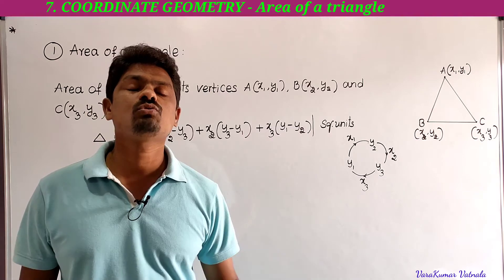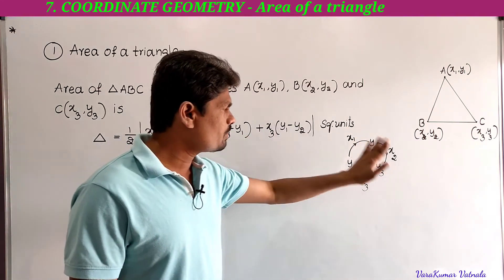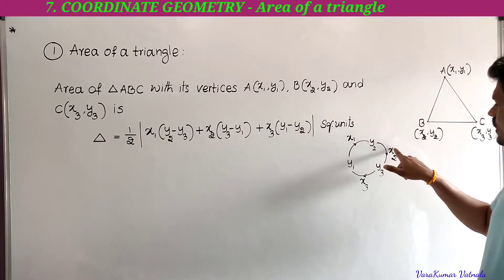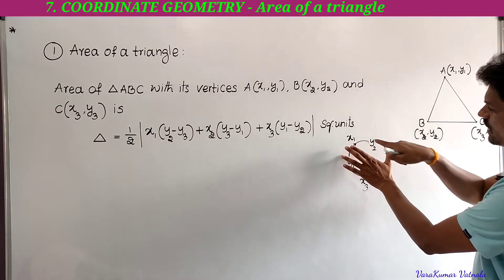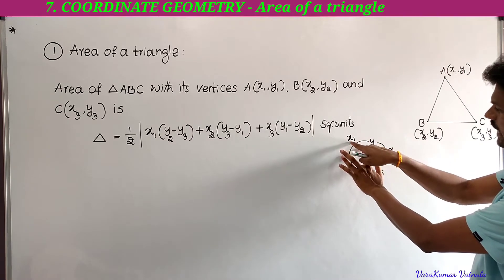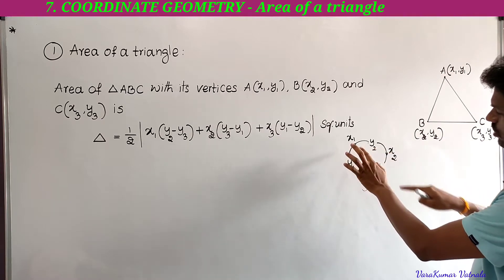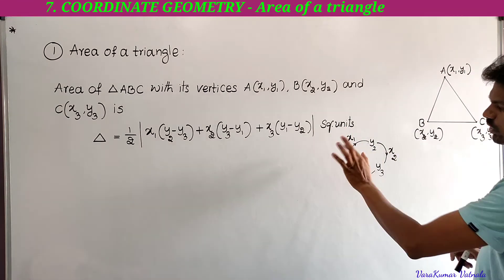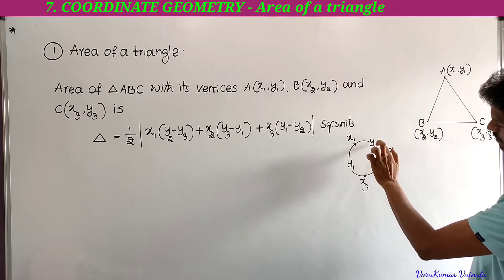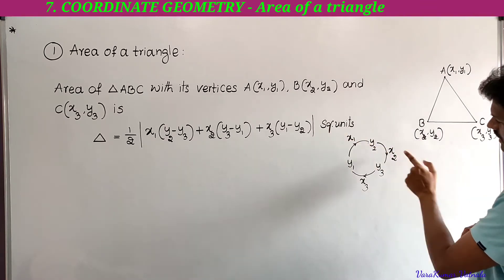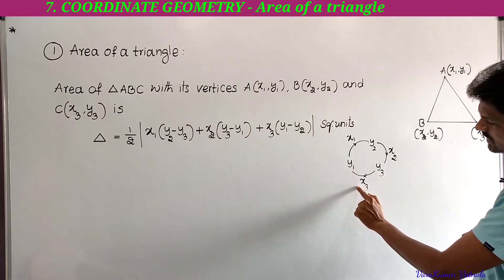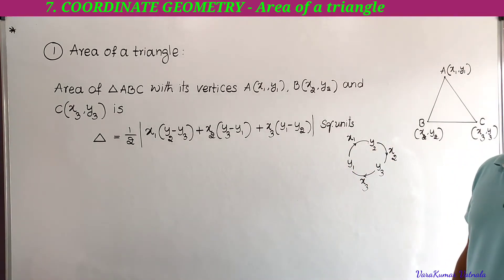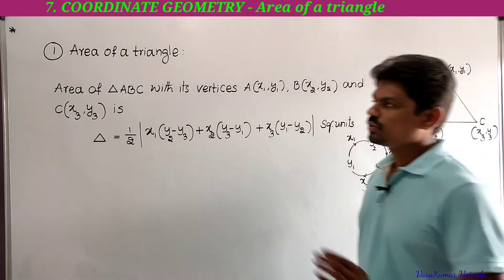To remember the formula, I have written it in a circular arrangement. Place y1, y2, y3 and x1, x2, x3 in the circle. Then the formula is: half into modulus of x1(y2 − y3) + x2(y3 − y1) + x3(y1 − y2). If you remember this circle, you can very easily remember the formula.